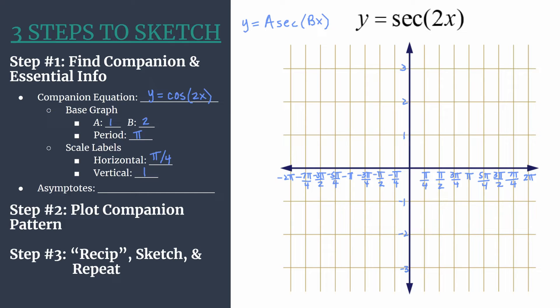So we have our axes labeled, we have all the information needed for step two where we're going to plot the companion pattern. But before we move on to that, let's go ahead and find the equation for the asymptotes of our secant graph.